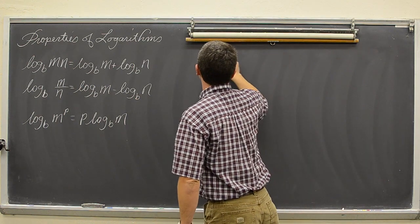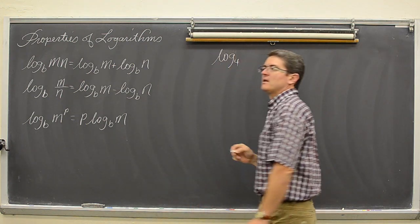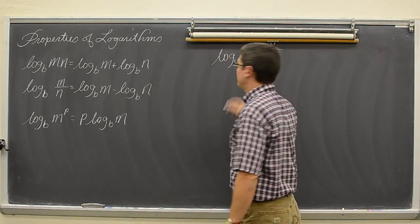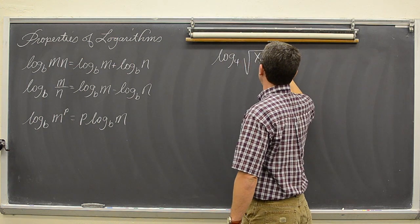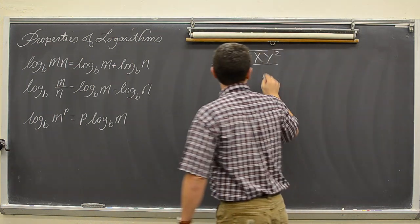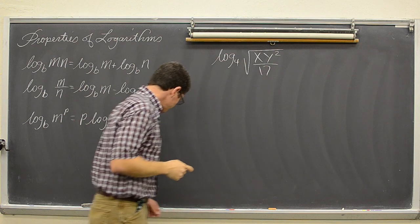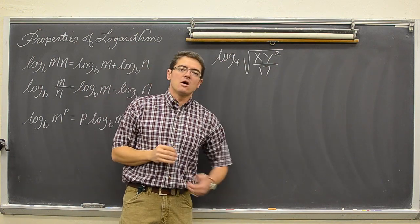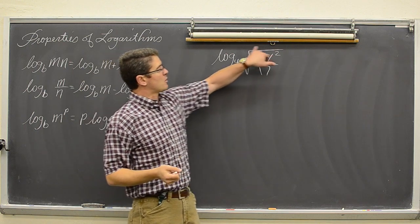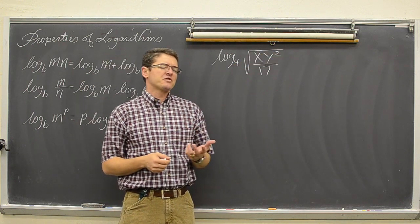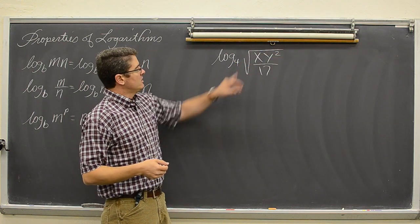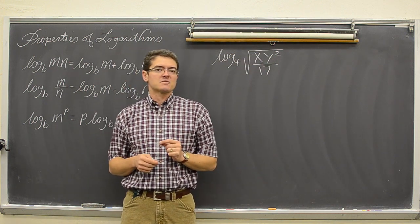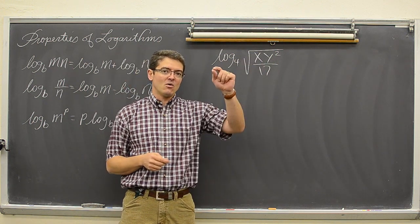Let's start off with log base four of the square root of x times y squared over 17. You do not want to work with radicals. They are nice for final answers and you are comfortable with them maybe at this point in mathematics, but once you get used to fractional exponents where it is power over root, those are much easier to deal with.